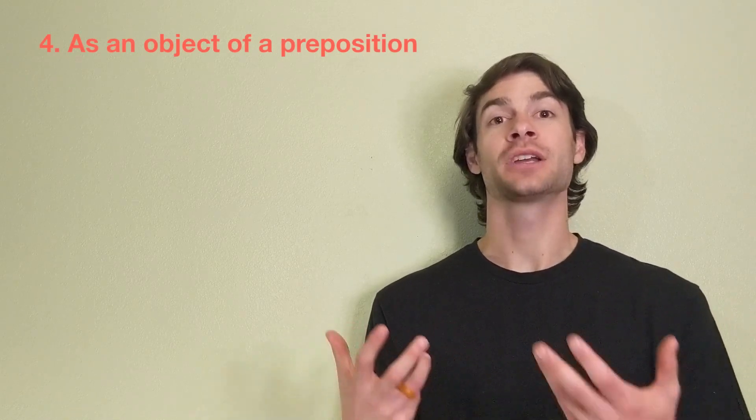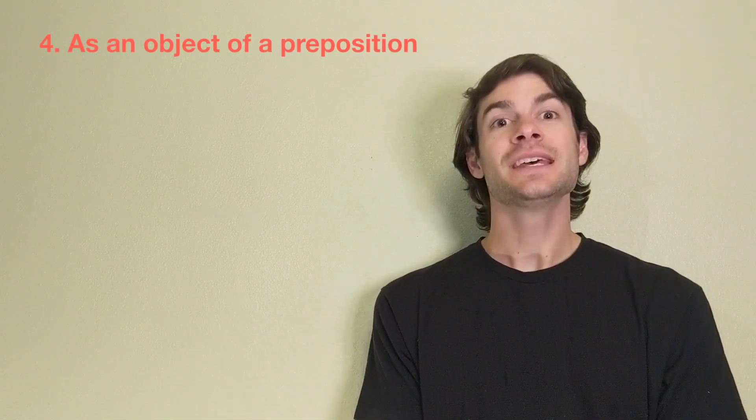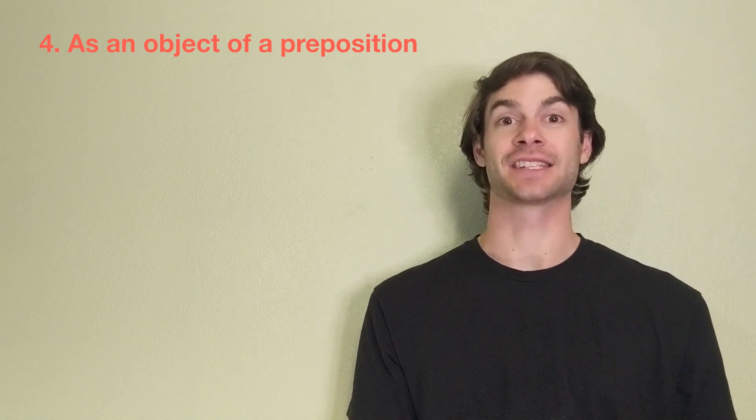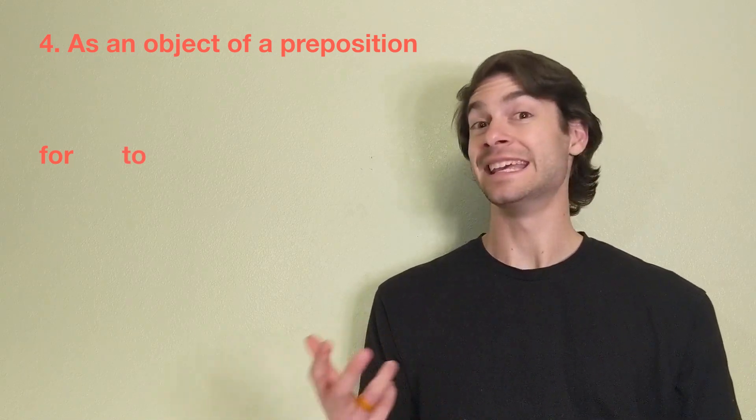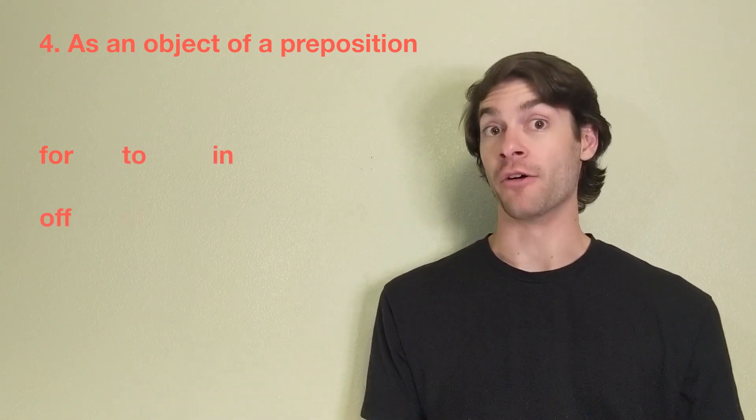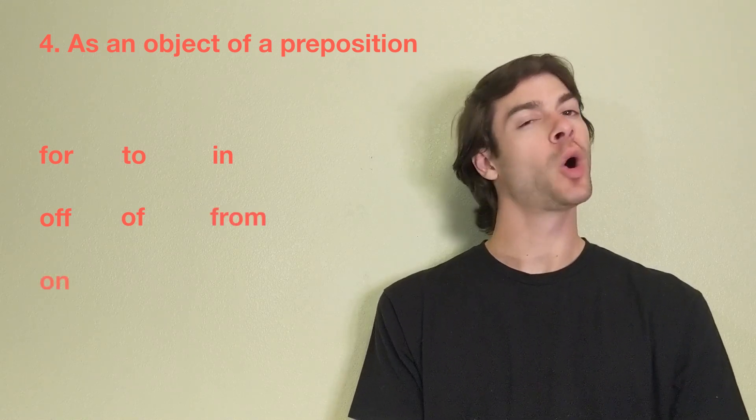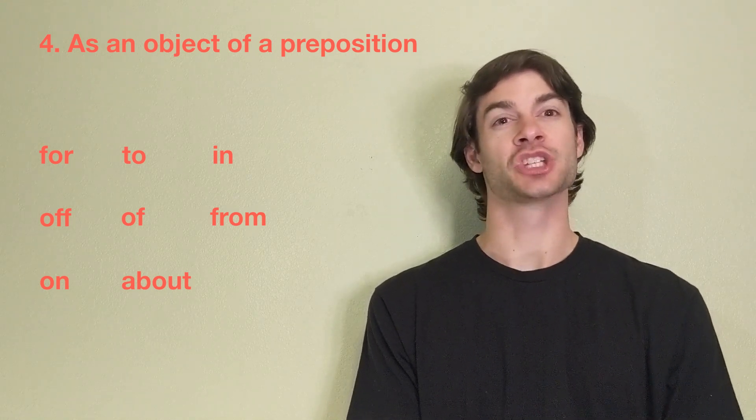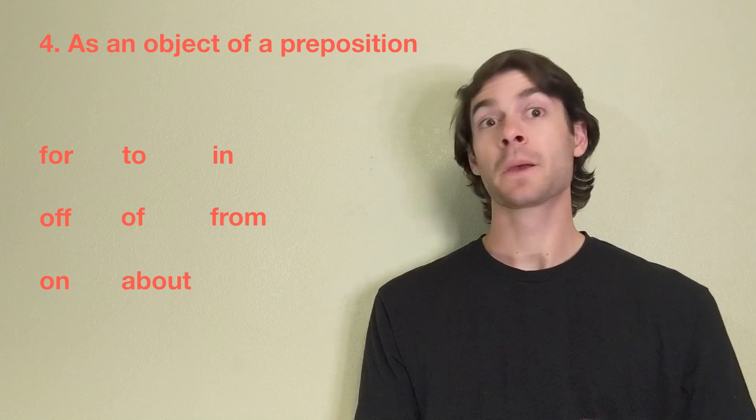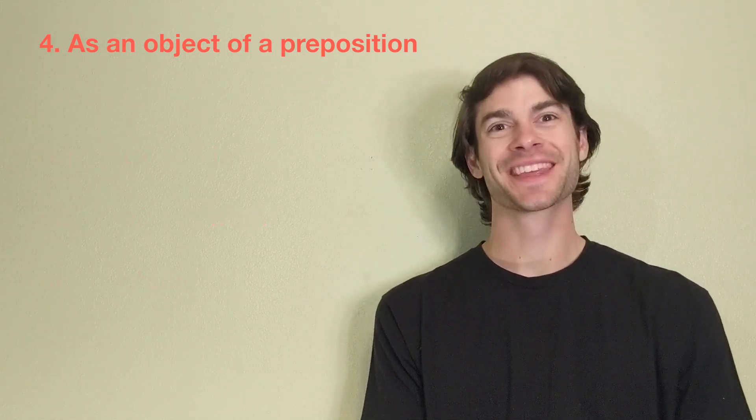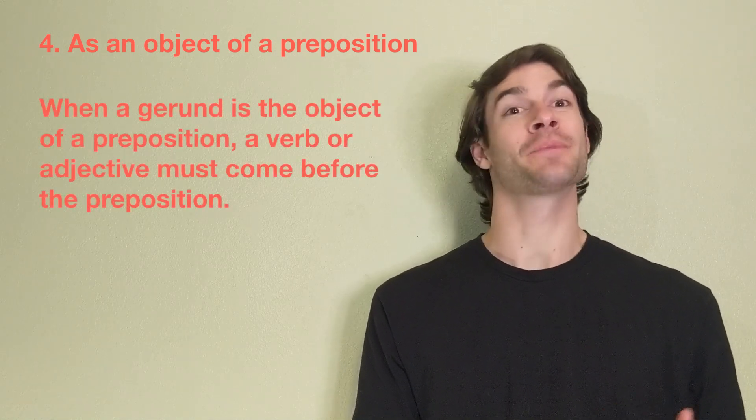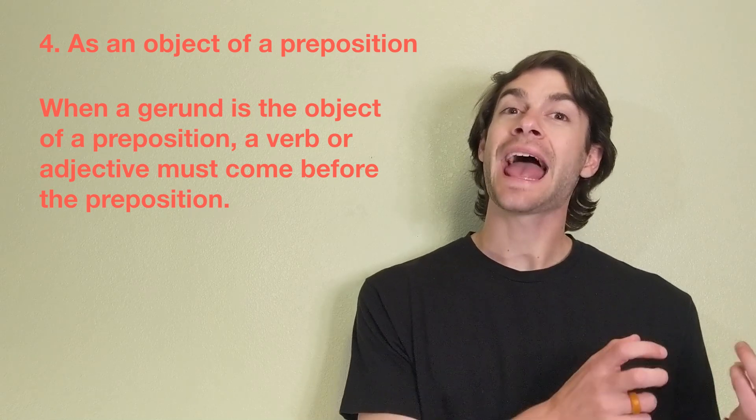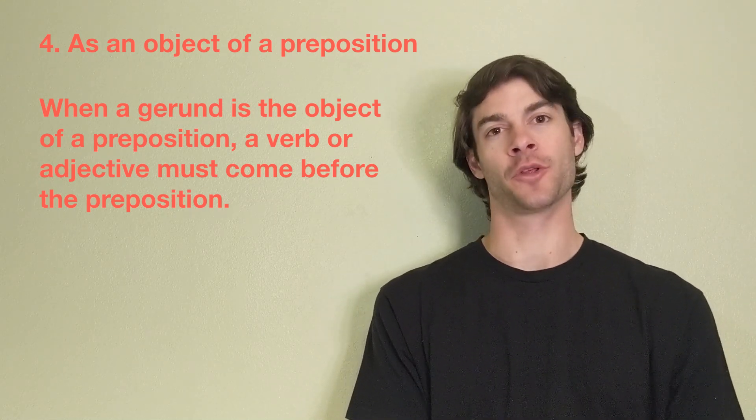The last and fourth way that we can use gerunds is how we talk about an object of a preposition. A gerund can follow prepositions, such as for, to, in, off, of, from, on, or about. There are more examples of prepositions that a gerund can be an object of, but these are some common examples. When a gerund is the object of a preposition, a verb or adjective must come before the preposition.